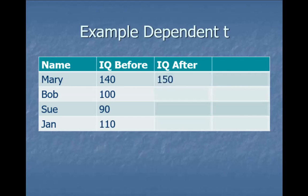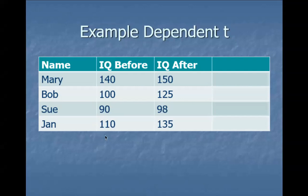Bob changes to 125, Sue changes to 98, and Jan to 135. So I have the data before they consumed vitamin K — I recorded their IQ score — and then I recorded their IQ score again after the intervention, which is vitamin K.